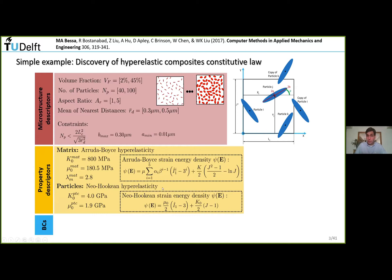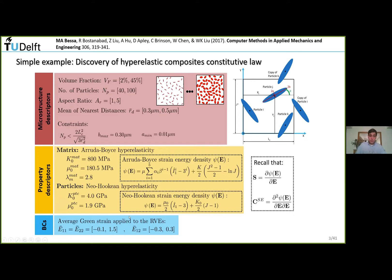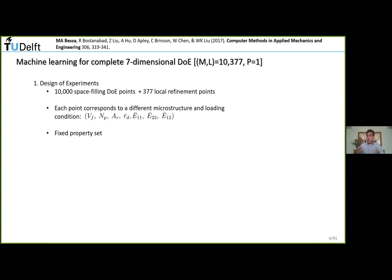Then you define property descriptors. In this case, we're keeping them constant - the Arruda-Boyce hyperelastic model for the particles and the Neohooken hyperelastic model for the matrix. We're not changing the phases in this particular problem. You subject this material to different boundary conditions - displace this representative volume element in different ways.